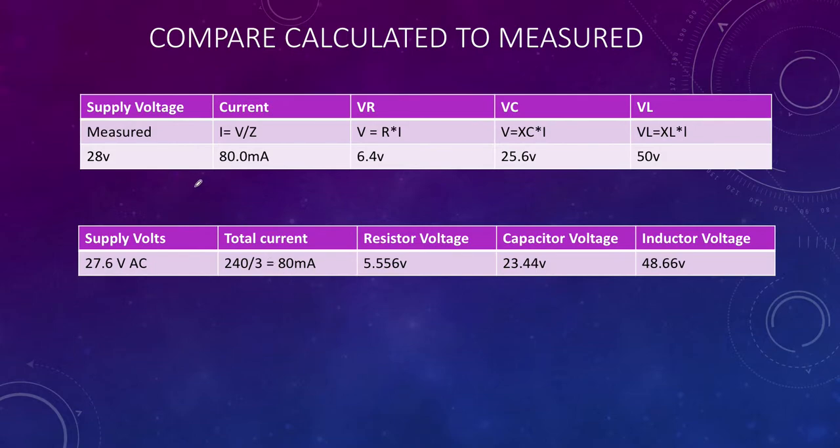Our voltage is in this column. We thought we would get 28, well we've got 27.6, so reasonably close there. We thought we would get 80 milliamps and we did get 80 milliamps or very, very close to it. Then we calculated for the voltage across the resistor we would get something in the order of 6.4 and we got 5.66. That's quite close. Only 0.8 of a volt out in the scheme of things with other resistances in the circuit that we didn't account for, like our 1 ohm resistor. We're probably very, very close to spot on there.